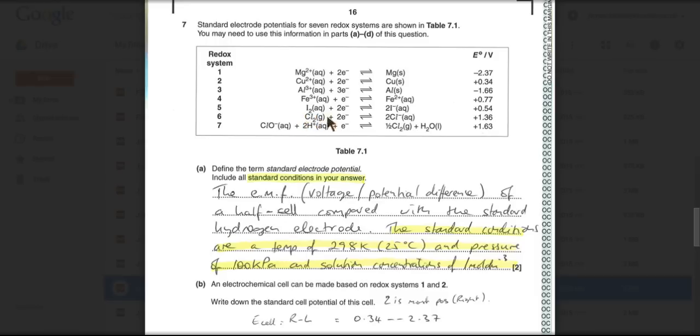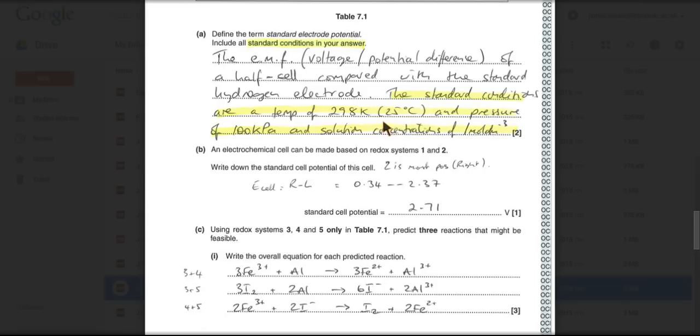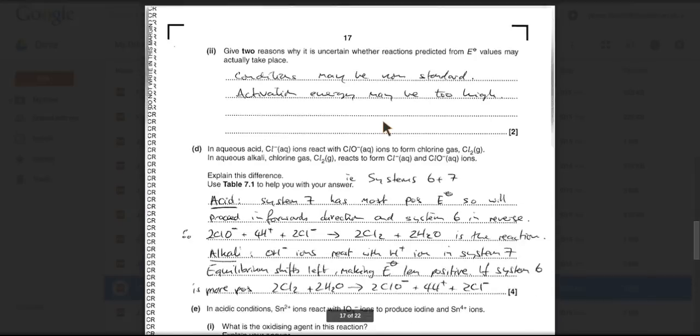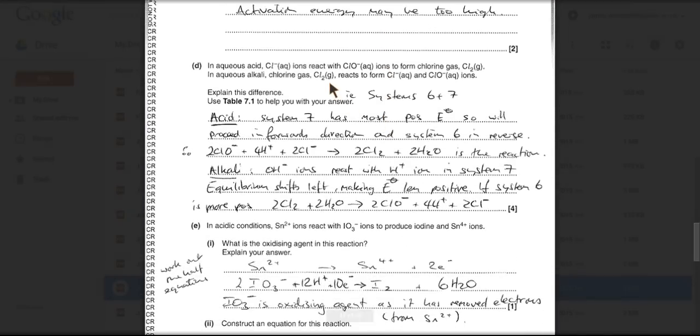So this one will run forwards and this one will run in reverse. So there you've got chlorine reacting to form chloride and chlorate. And that's exactly what it says in the statement there. In aqueous alkali, chlorine reacts to form chloride and chlorate.